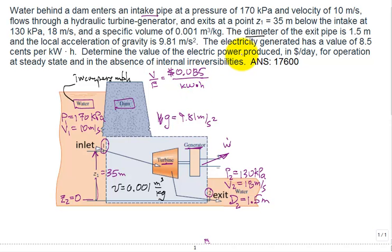Determine the value of the electricity produced in dollars per day for operation if the dam is running at steady state and in the absence of internal irreversibilities. So the turbine has no internal irreversibility, sigma dot at turbine equals 0. The generator, sigma dot equals 0. The flow in the pipe, sigma dot equals 0. And they give us this dashed line indicating a control volume. The answer we expect is about $17,600 per day.